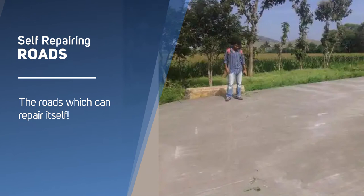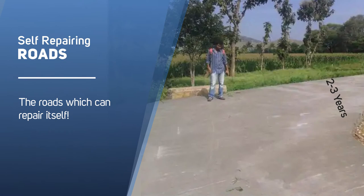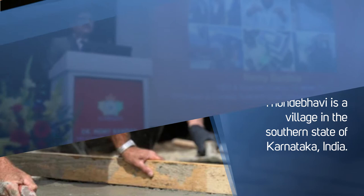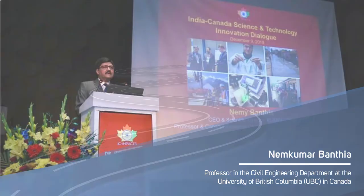Here comes the next invention, self-repairing roads, the roads which can repair itself. The average lifespan of roads in Indian rural areas is 2-3 years. In 2014, a village school Thonde Bhavi was selected for a trial to construct a road that will repair by itself. It was developed by Neen Kumar Bhantia, a professor in the civil engineering department at the University of British Columbia in Canada.